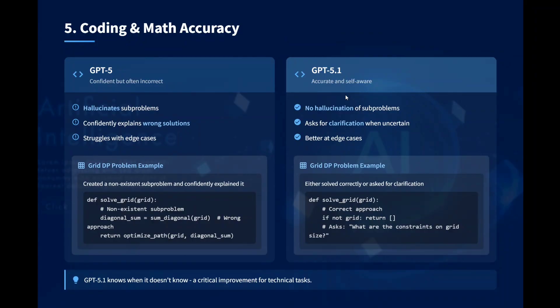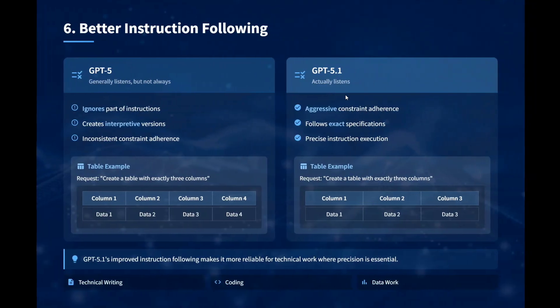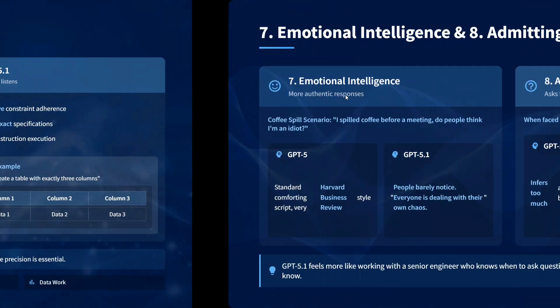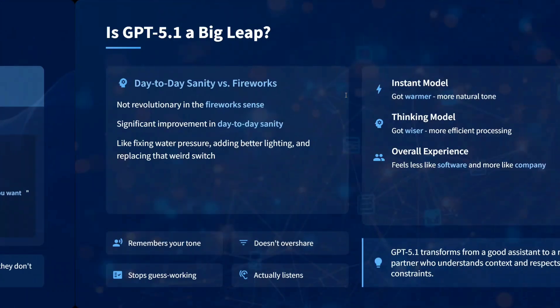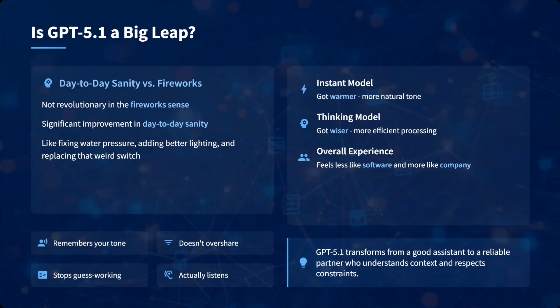On coding and math: GPT-5.1 shows no hallucinations and has improved on both coding and math accuracy. On instruction following: as the first example showed, GPT-5.1 is definitely better — it is aggressive about following whatever instruction has been given.